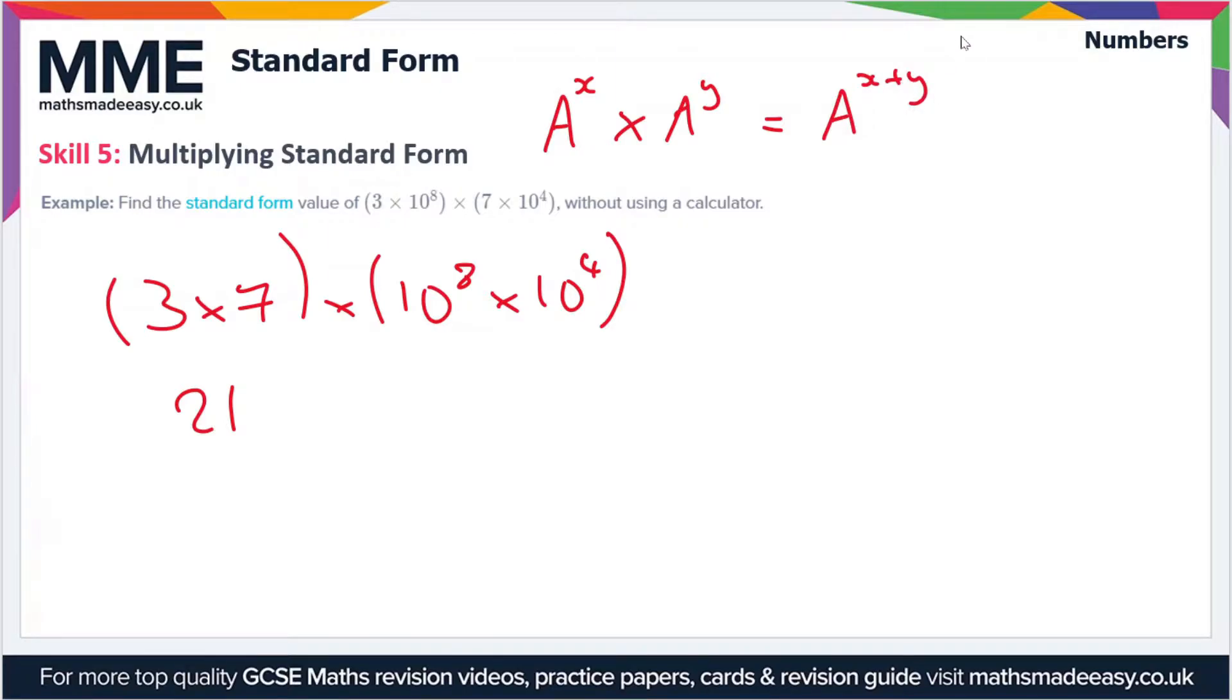In other words, when you multiply two numbers that are the same but have different powers together, you just add the powers. So this is going to become 21×10¹².